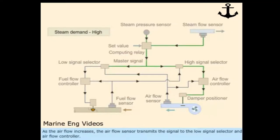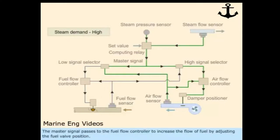As the air flow increases, the air flow sensor transmits the signal to the low signal selector and the air flow controller. The master signal then passes to the fuel flow controller to increase the flow of fuel by adjusting the fuel valve position.